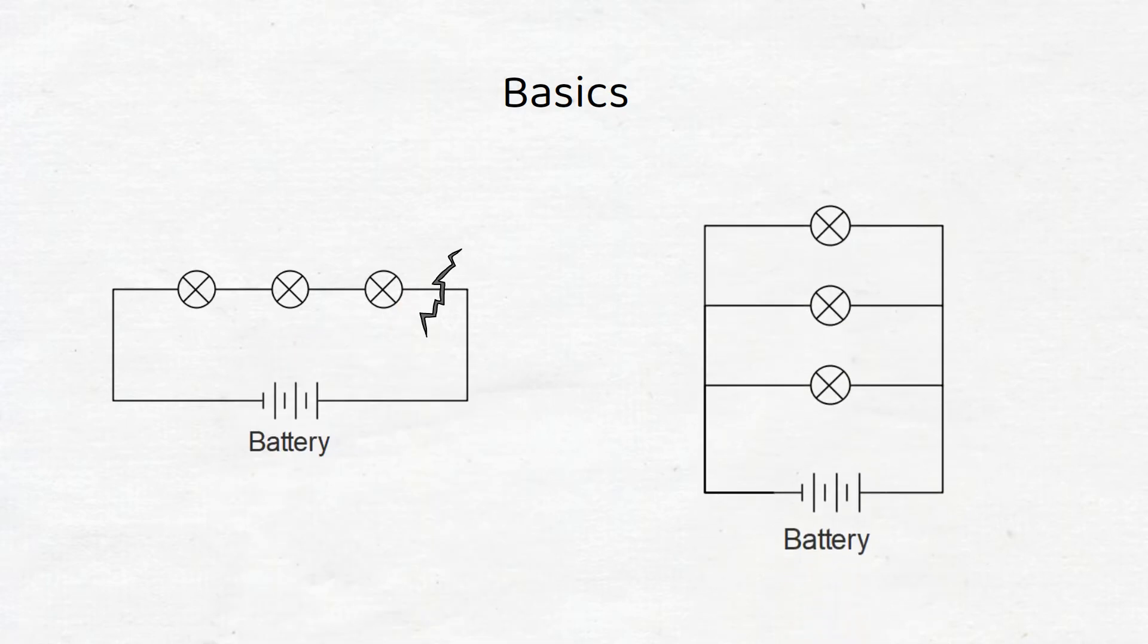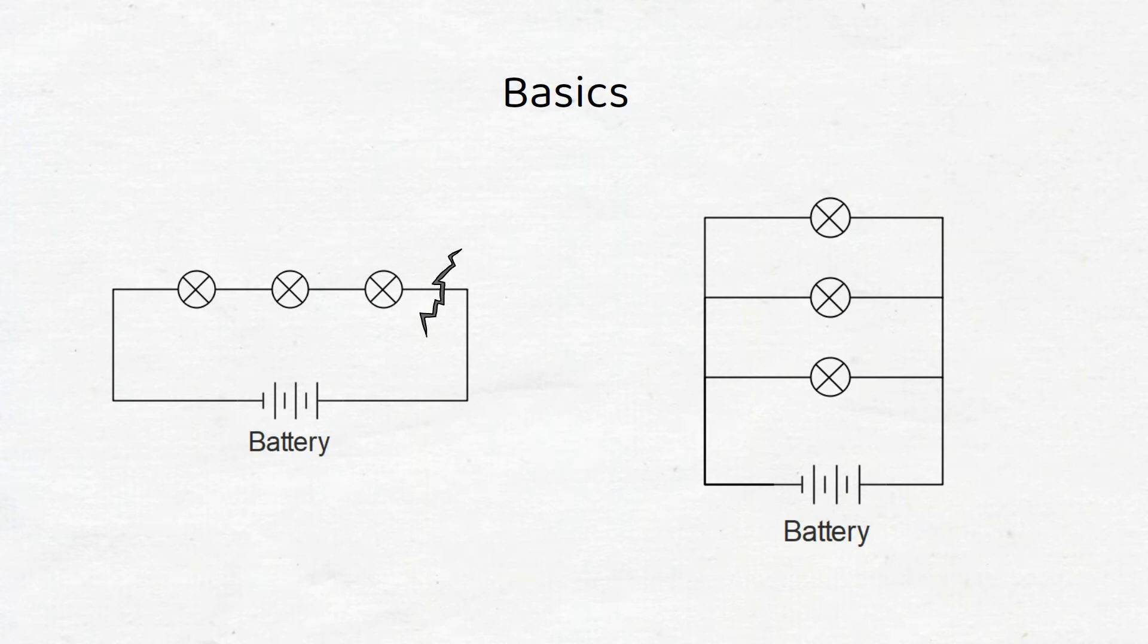In a parallel connection, all the positive wires are connected to each other, and all the negative wires are connected to each other. The wires come together in a combiner box. If one of the wires from the light breaks, the other lights will still work.